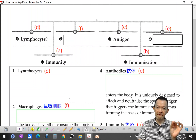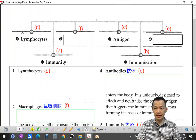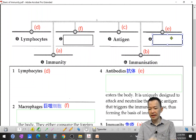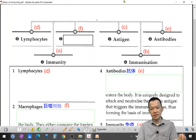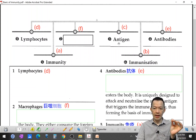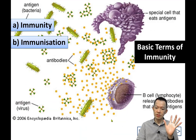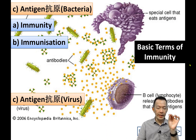The three terms are: C — antigen (抗原), D — lymphocyte, and E — antibody (抗体). Lymphocytes are white blood cells found in the lymph nodes of the lymphatic system. Now, how do we use these three words together — antigen, lymphocyte, antibody?